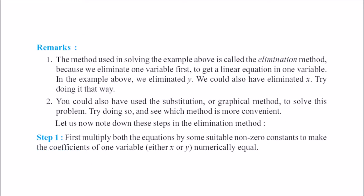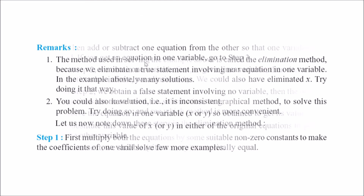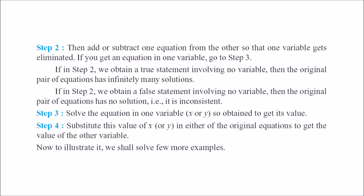In general, you multiply the equations such that either x or y becomes numerically equal and gets cancelled out. If x is cancelled you find y, and if y is cancelled you find x. Then substitute the found value back into the original equation to get the final answer.